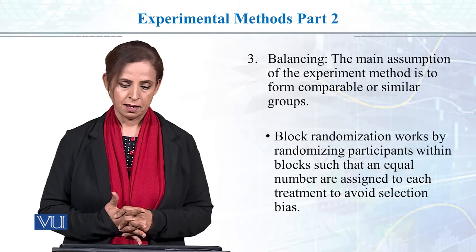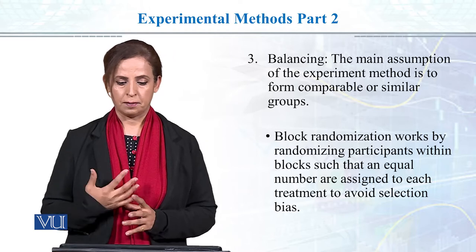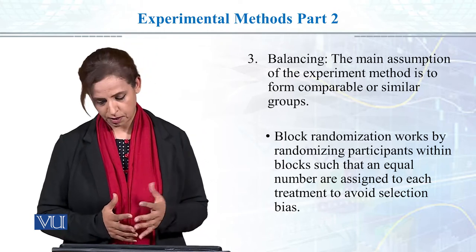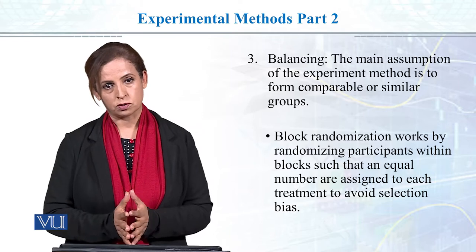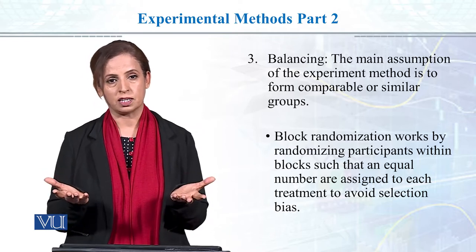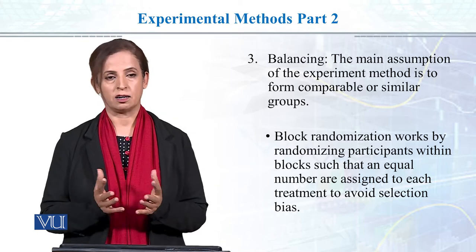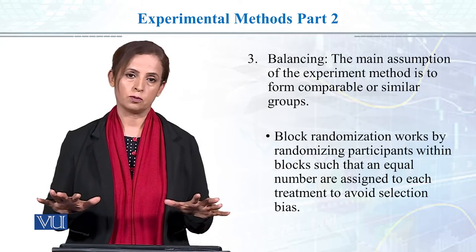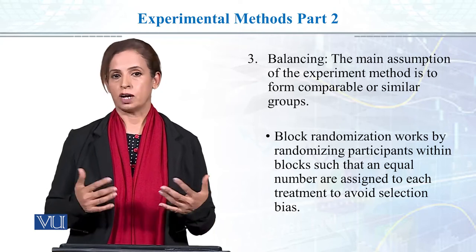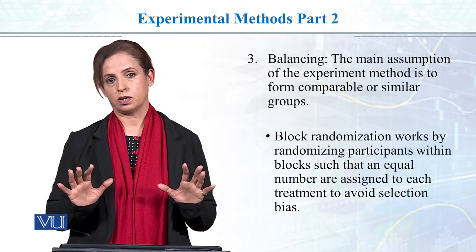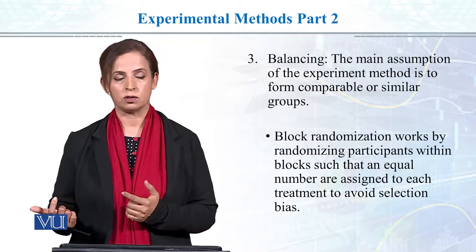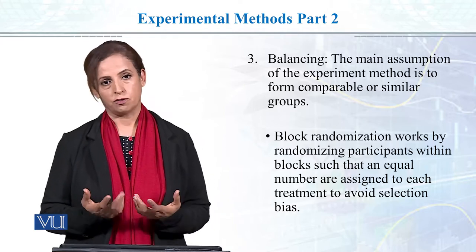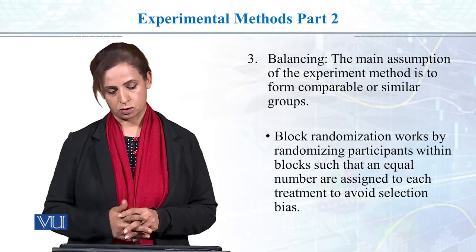The third component is balancing. You can balance through block randomization or through matching, just to make sure that individual differences are equally distributed across the two groups. Also, the content delivered must be similar — it should not be that one group was taught botany and the other psychology, because that would be a confound and could contaminate the findings.